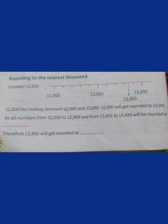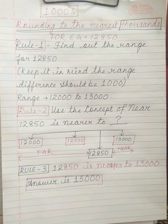The next topic is rounding to the nearest 1000. Let us take an example: 12850. As it is told to find out the number rounding to the nearest thousands, the range difference should be 1000. So, the range is 12000 to 13000. So, 12850 will be nearer to 13000 and not 12000. So, 12850 is rounded up to 13000.